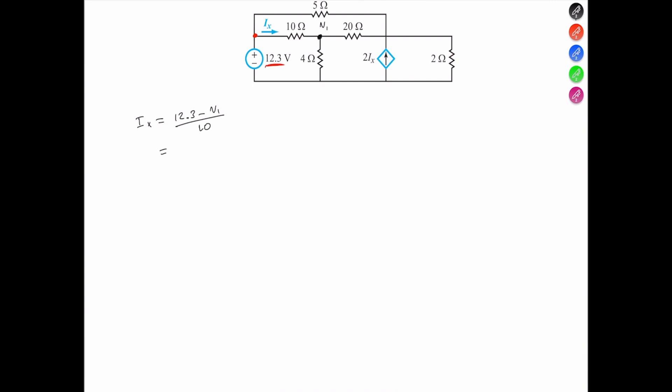To find Ix, however, we need to find the voltage at this terminal. Now let's call it V2. Applying KCL.